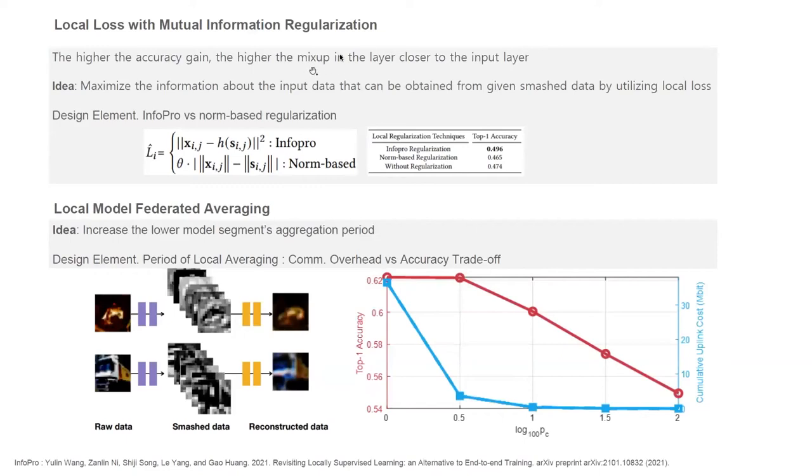Next key technique is local loss. The purpose of utilizing local loss for SL can be roughly divided into two categories. First one is to update the local lower model if the gradient is not transmitted or transmission fails as in SplitFed and LocSplitFed. And second one is to control the amount of information contained in SMASH data. We utilize the local loss algorithm for the latter purpose. Note that the higher the accuracy gain, the higher the mix-up in the layer closer to the input layer. If the local loss is set to maximize the mutual information between the SMASH data and the input data, this can have a similar effect to bringing the cut layer down to the input layer. Accordingly, if it is used together with the SMASH data mixer of the previous page, it is expected that the accuracy gain from the mix-up can be maximized.